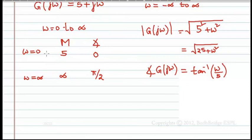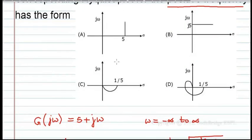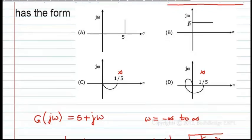Therefore, at omega equal to 0, magnitude should be 5 and angle should be 0. Omega equal to 0, 1 by 5 is not at all an option. Therefore, c and d are wrong. At omega equal to 0, it should be 5. And omega equal to infinity, it should be infinity and it should be pi by 2. Therefore, this is correct.